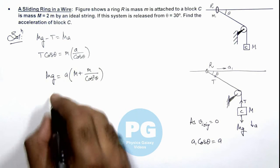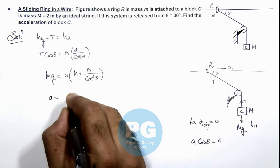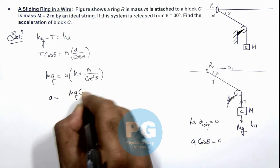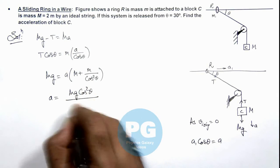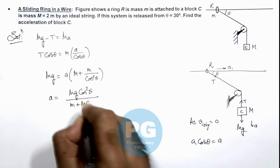From here we are getting the value of acceleration, that is mg cos square theta by m plus capital M cos square theta.